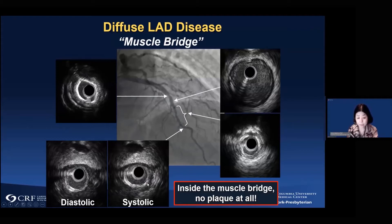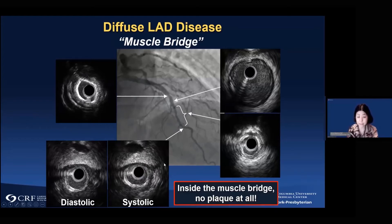Inside the bridge is always normal, and you see the very dark area—that's the bridge. We analyzed muscle bridges in consecutive cases and found a prevalence of 25% in the LAD. This is not infrequent. So whenever you see a diffuse LAD lesion, keep in mind there may be a bridge at the distal end of the region—which you should not cover, because covering it will most likely cause restenosis.